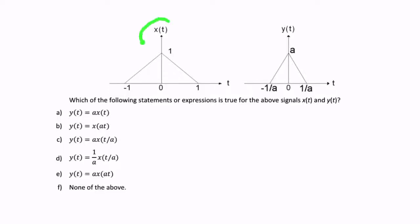So, in this question, we're given two signals, x and y, and we're asked about how can we get y from x? What's the transformation that will take us from x to y? So, how can we write y in terms of x? That's really the question.